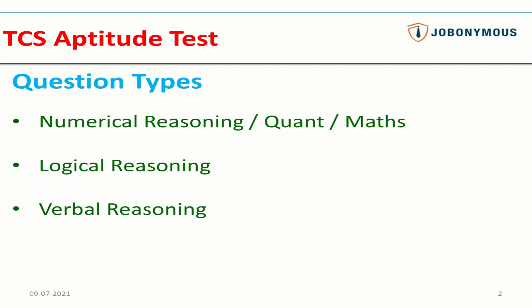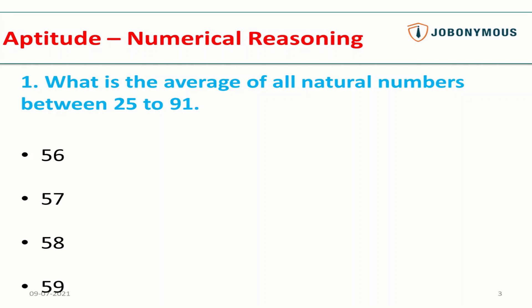The first question is: What is the average of all natural numbers between 25 to 91? If you look at this question, it seems very tricky and tedious because you would have to calculate the sum of all numbers from 25 to 91 and then divide it by the total numbers between 25 and 91, which is a huge, time-taking process. But if you know the trick, which is just the formula to solve this question, you will be able to solve it easily.